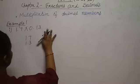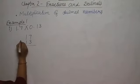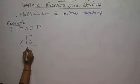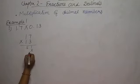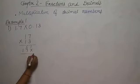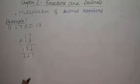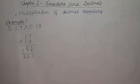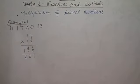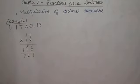Now let's look at this. The result of 17 × 13 is 221. You all know how to do multiplication. But the point is that we need to place the decimal.